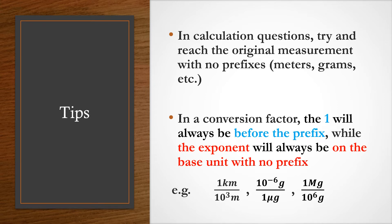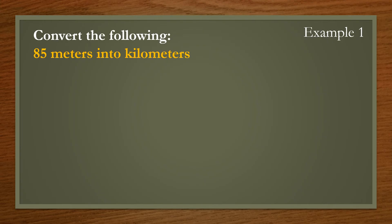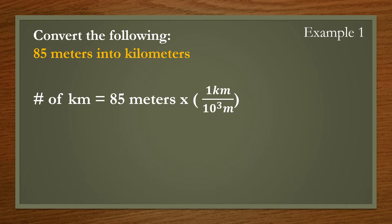Example 1: convert 85 meters to kilometers. Referring back to the table, we know that kilo is 10 to the power of 3. Since we are already at the base unit of meters with no prefix, we multiply 85 by 1 over 10 to the power of 3. Meters cancel out and we reach a final answer of 8.5 times 10 to the negative 2 kilometers.